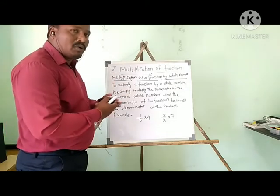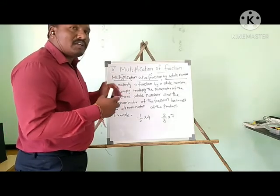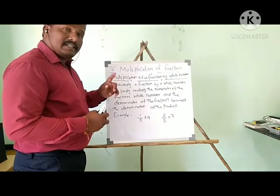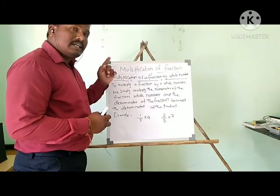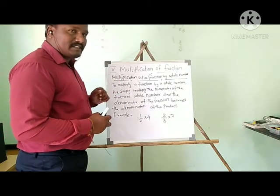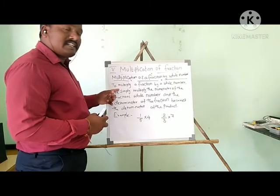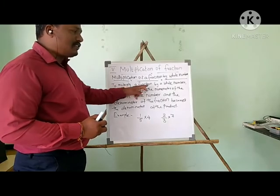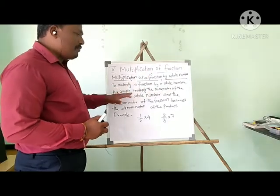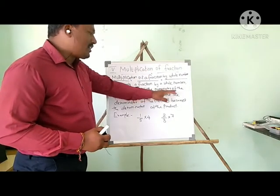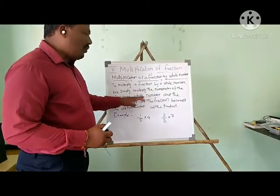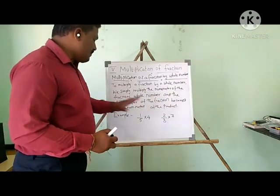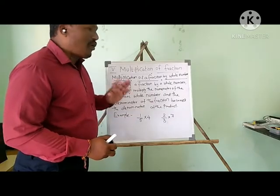When you multiply a fraction with a whole number, you have to multiply the whole number to the numerator of the given fraction. The rule says: to multiply a fraction by a whole number, we simply multiply the numerator of the fraction by the whole number, and the denominator of the fraction becomes the denominator of the product.